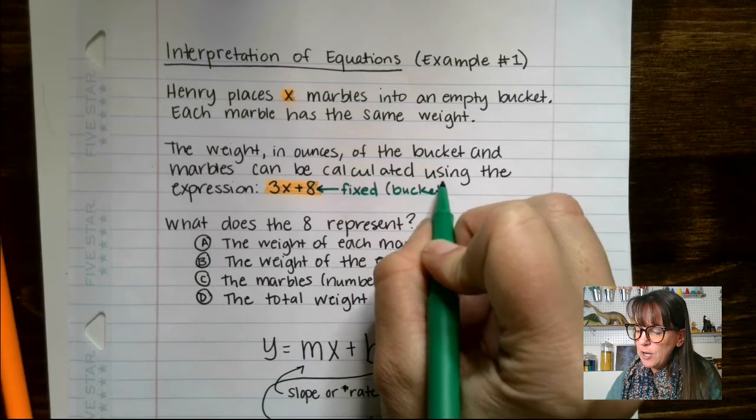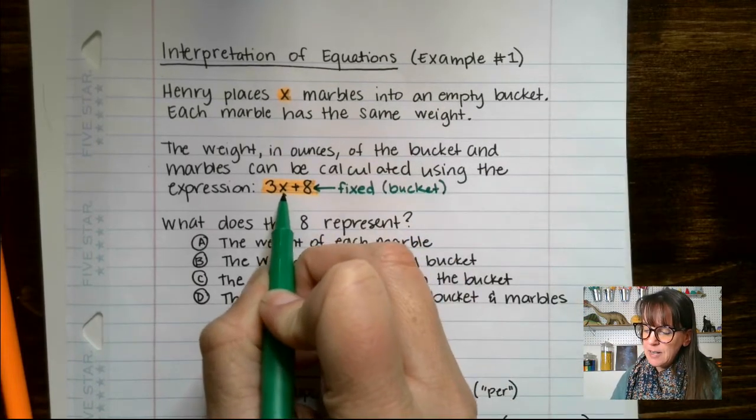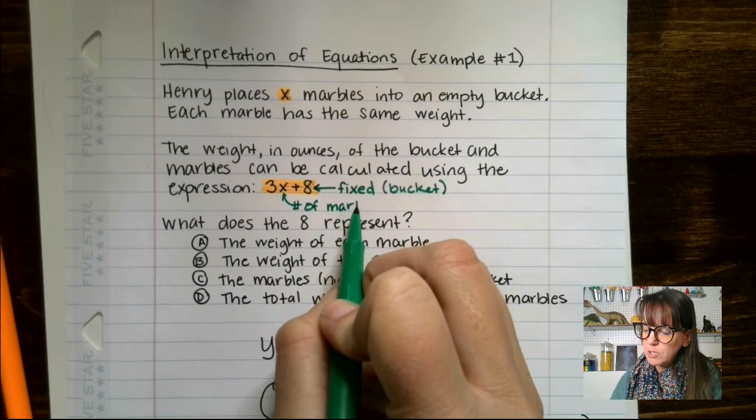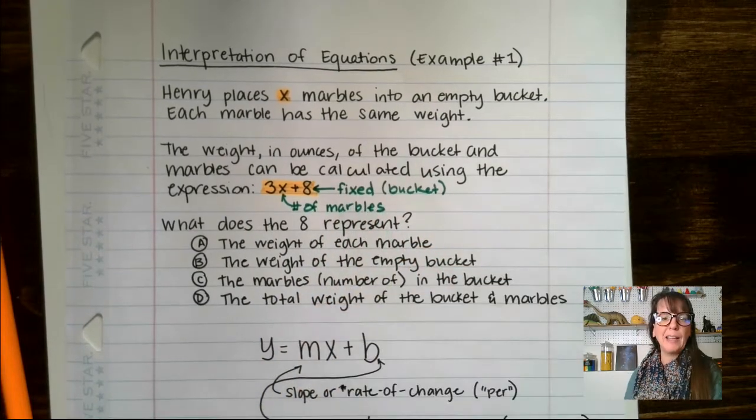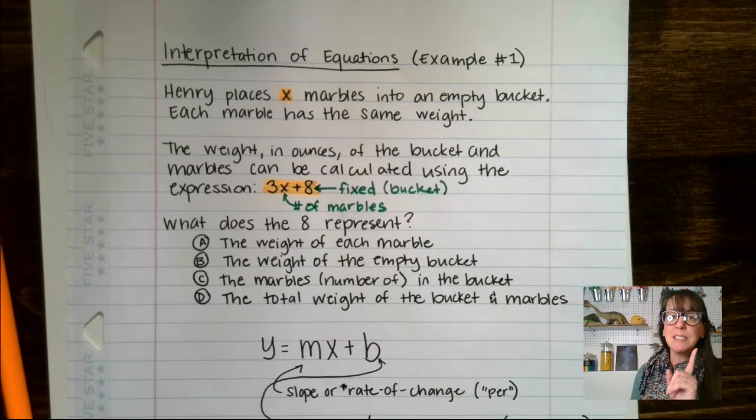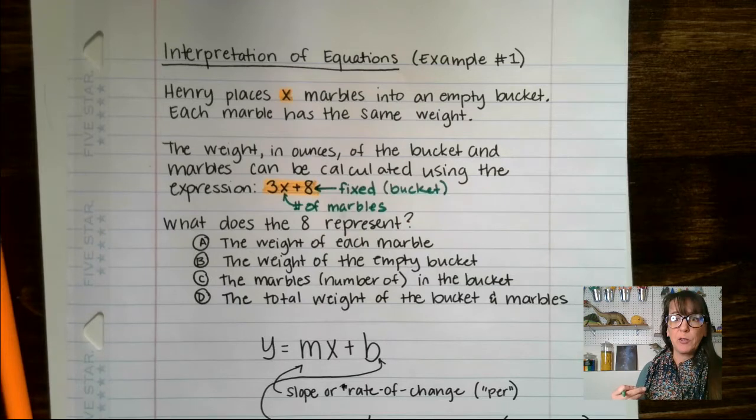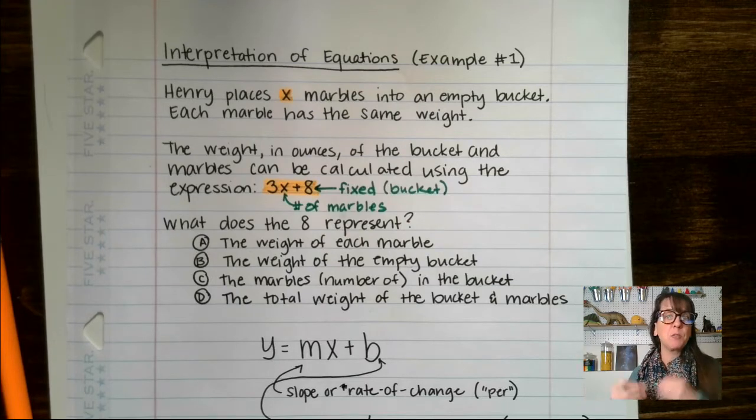Now we know that x represents the number of marbles. We are multiplying the number of marbles by three. That must mean that each marble weighs three ounces, because if we have one marble, we multiply by three. If we have 10 marbles, we multiply by three and get 30 ounces.